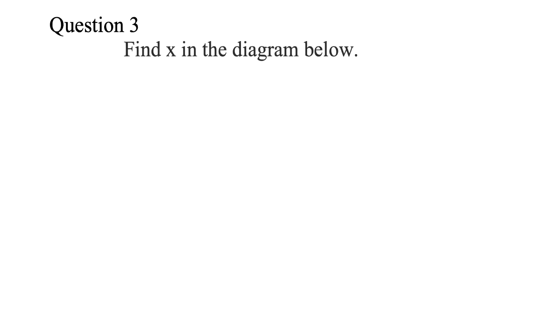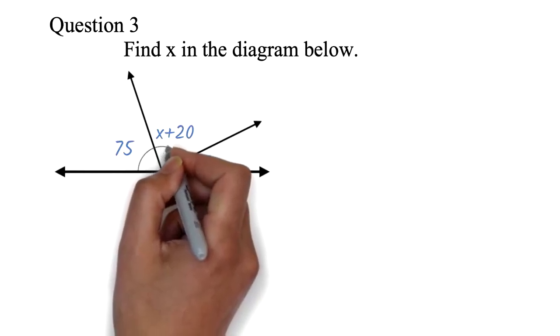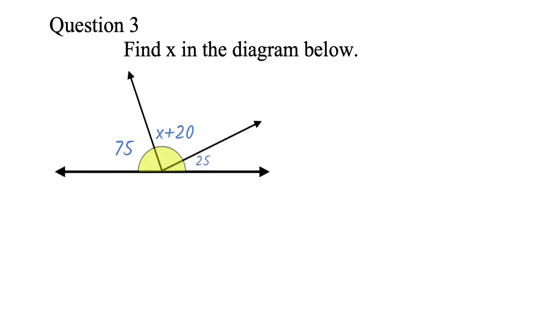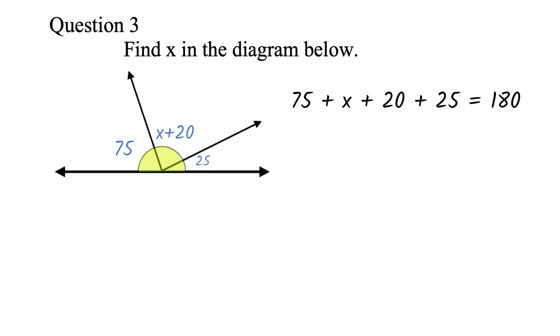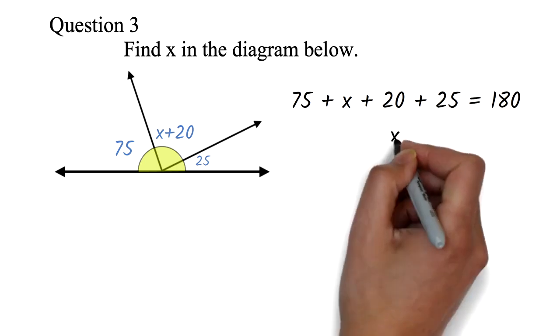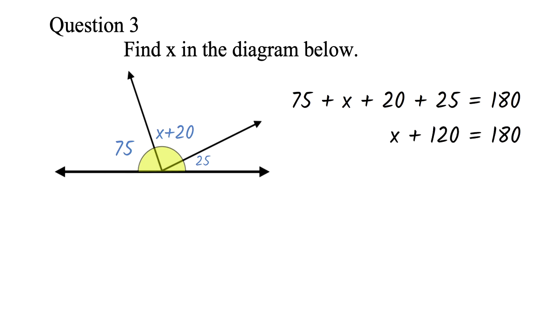Question 3: Find X in the diagram below. The work here is being able to identify that this is angles on a straight line. Angles on a straight line add up to 180 degrees. Once you know that, you will just add everything and equate it to 180. Then solve the resulting equation. So here, we will add 75 plus X plus 20 plus 25 equals 180. We can add the numbers 75 plus 20 plus 25 to get 120. So we have X plus 120 equals 180. We can subtract 120 from both sides. The 120 will cancel out. 180 minus 120 is 60. So X is 60.